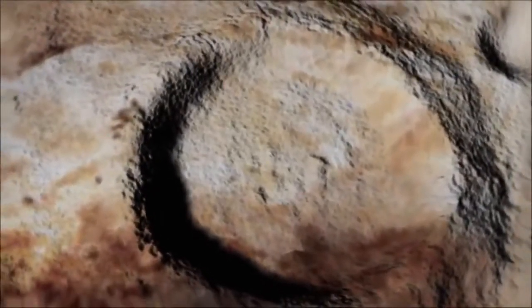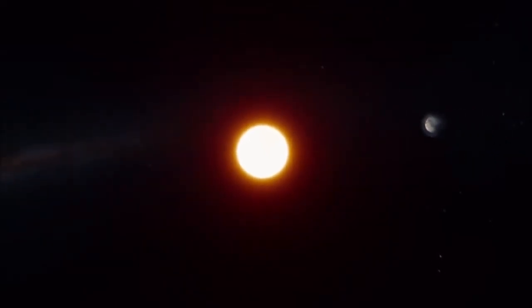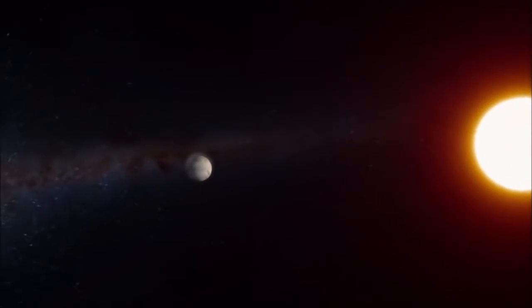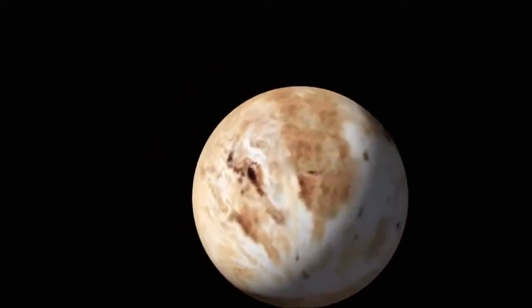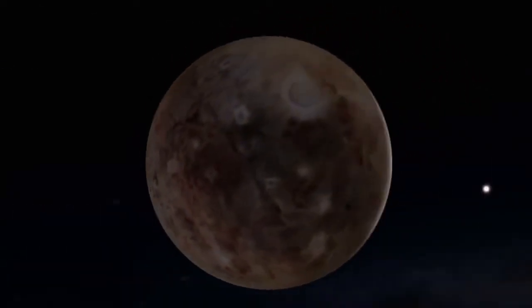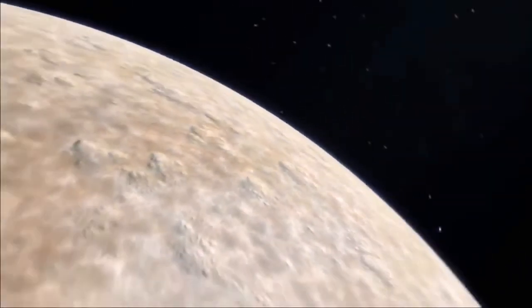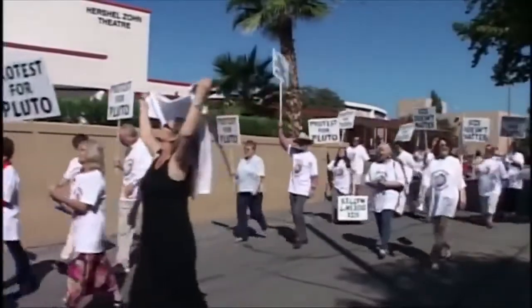Pluto's pockmarked surface undergoes a transformation as it orbits near the sun. Under the additional heat, some of the frozen gases evaporate to form a temporary atmosphere. As Pluto recedes from the sun, the gases freeze again and fall back down to the surface. For more than 75 years, this far-out icy object staked its claim as our ninth planet. So why is this little piece of snowy rock now causing such controversy?